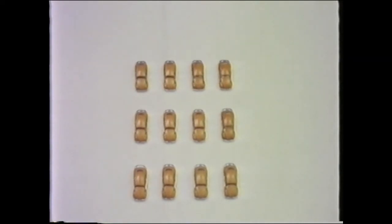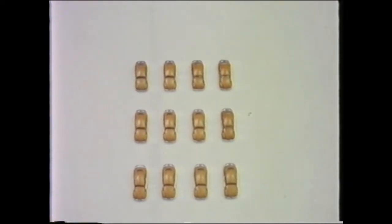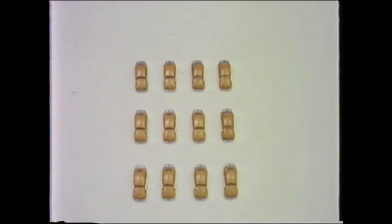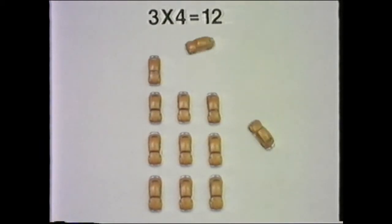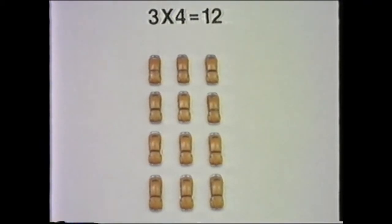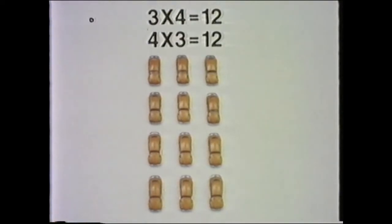Now they're in three rows with four cars in each row. And of course you know from before how many there are all together. So what would you say about this array? That three rows of four equals twelve. Let's restate the idea in a mathematical sentence. Three times four equals twelve. Times means to multiply, and we use an X to represent multiplication. Now if three times four equals twelve, we can also say it's the same as four rows of three, or four threes — four times three equals twelve. Four times three equals twelve is the same as three times four equals twelve.